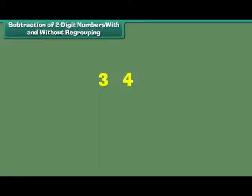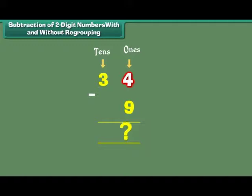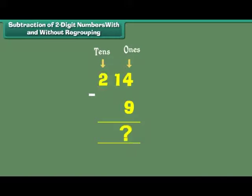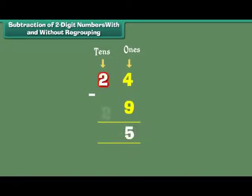What is 34 minus 9? 34 has 3 tens and 4 ones. We want to remove 9 ones. As 9 ones cannot be removed from 4 ones, we regroup 1 ten as 10 ones. Now we have 2 tens and 14 ones. We remove 9 ones from 14 ones. We are left with 5 ones and 2 tens. Therefore, 34 minus 9 is equal to 25.